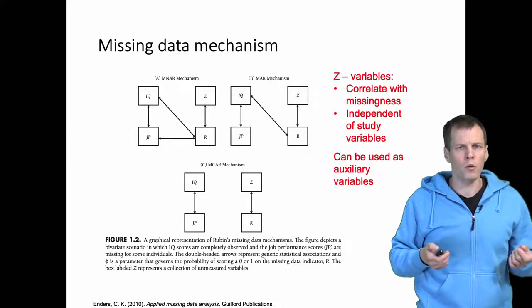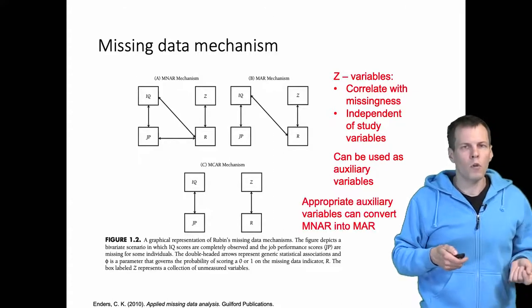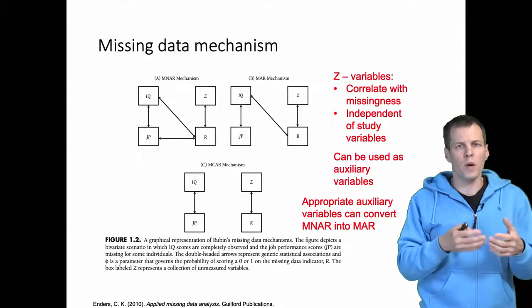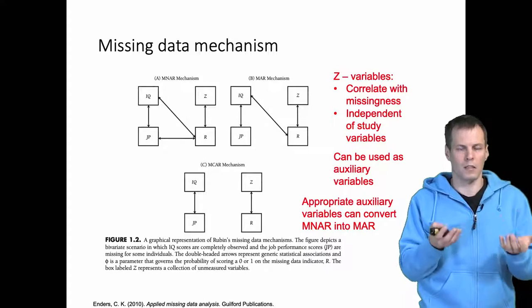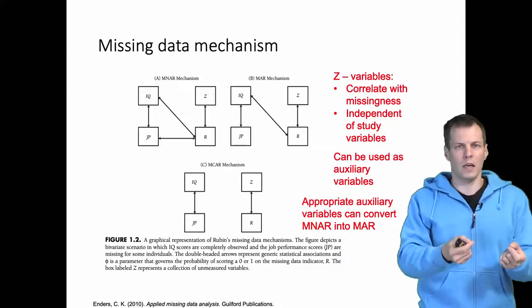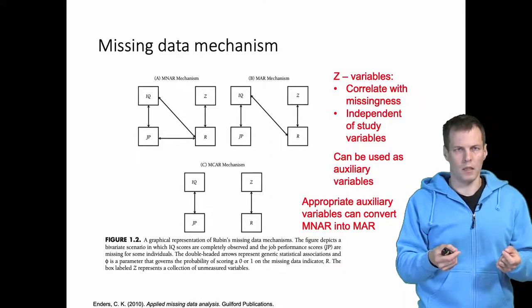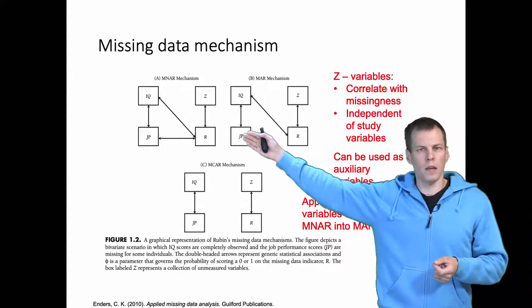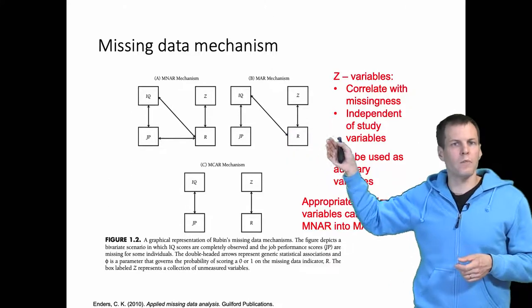So what we can do is use these as auxiliary variables. We use the information from these auxiliary variables—other variables, they're often demographic variables—to make our missing data estimation better. And one nice thing about auxiliary variables is that in some cases they can convert this problematic missing not at random pattern to a less problematic missing at random pattern.